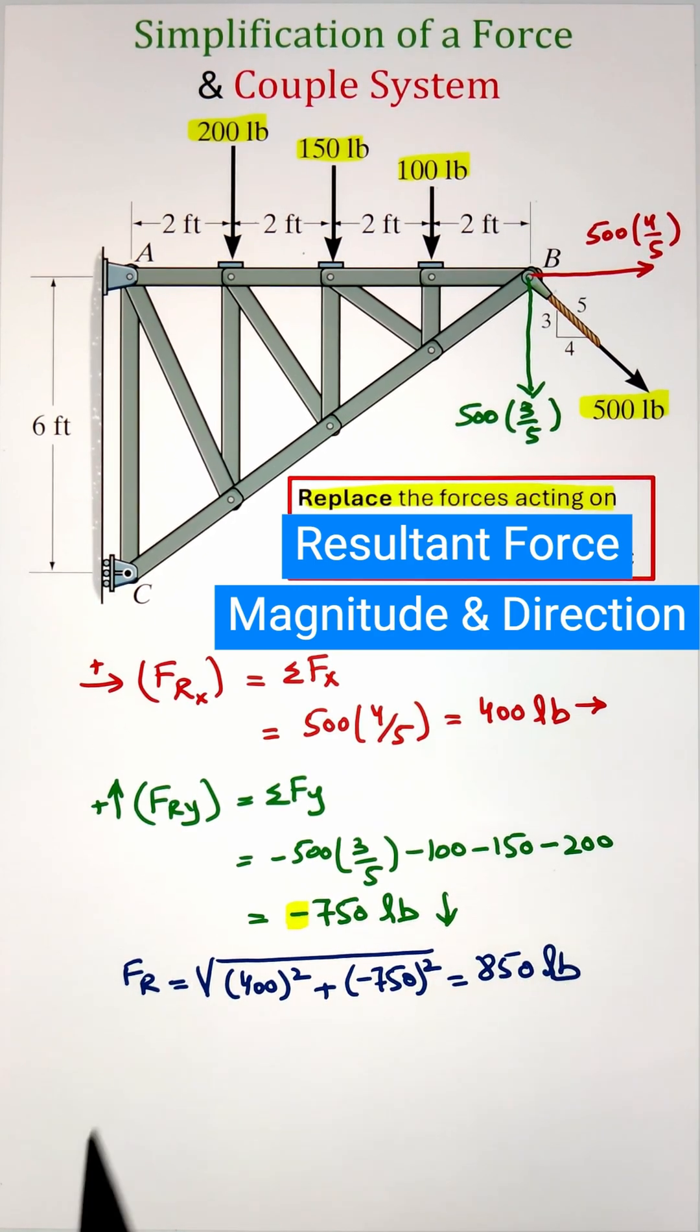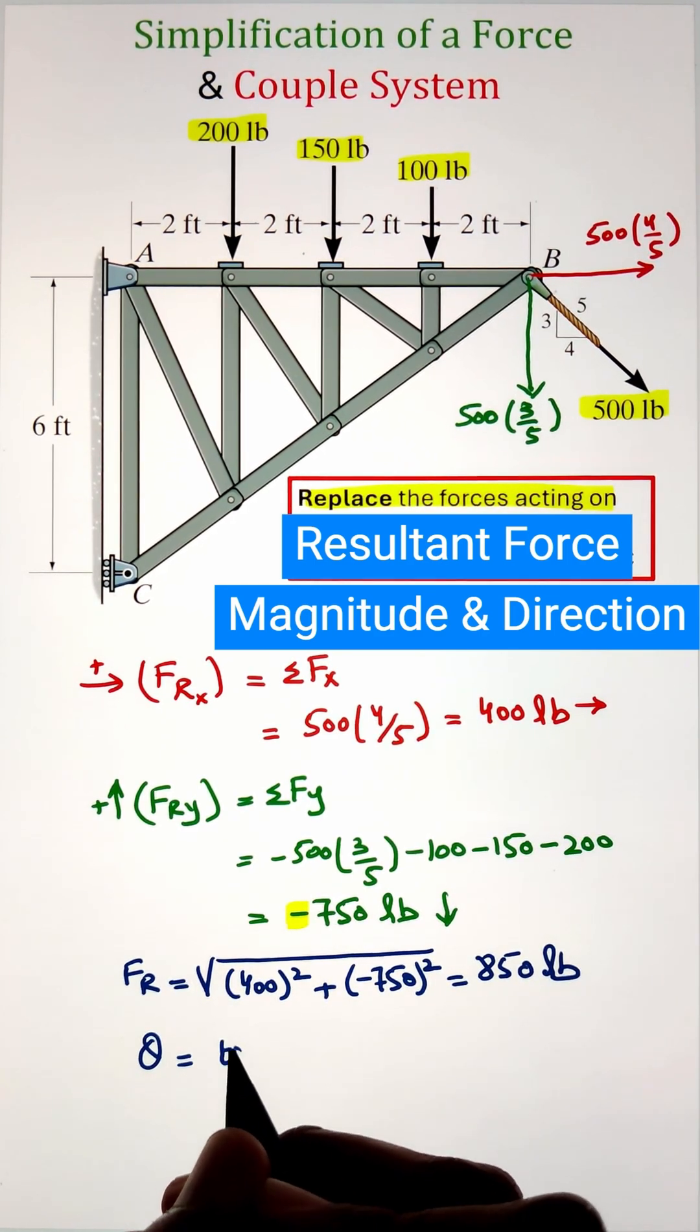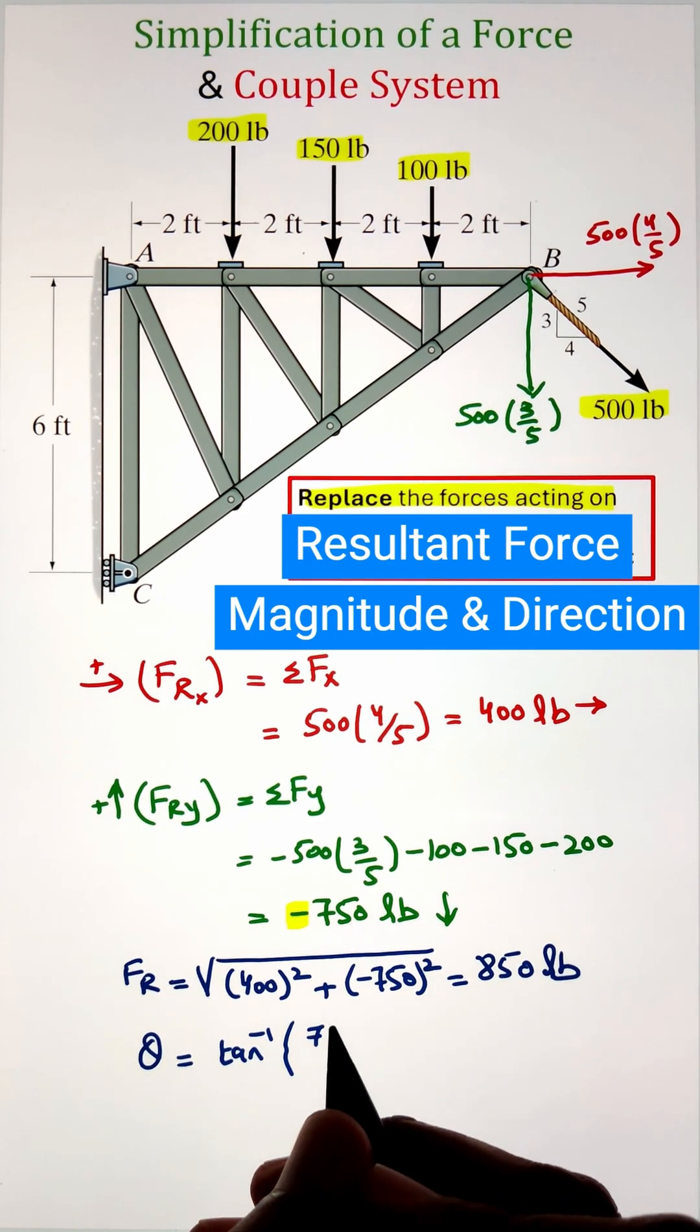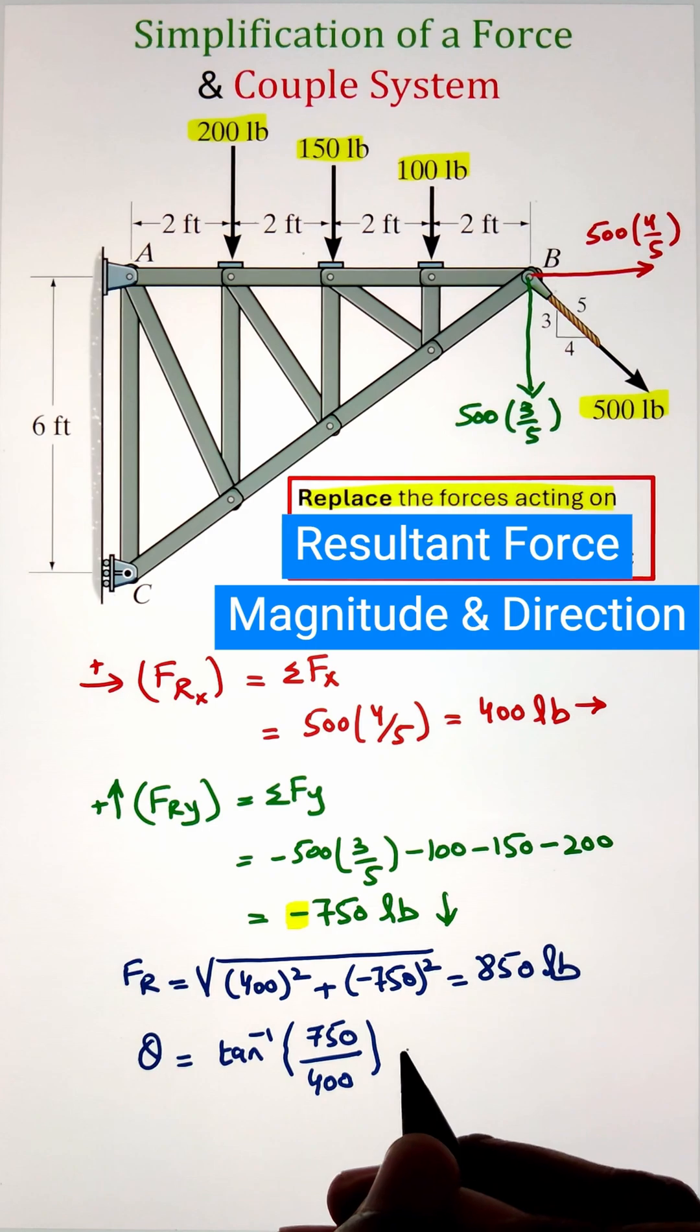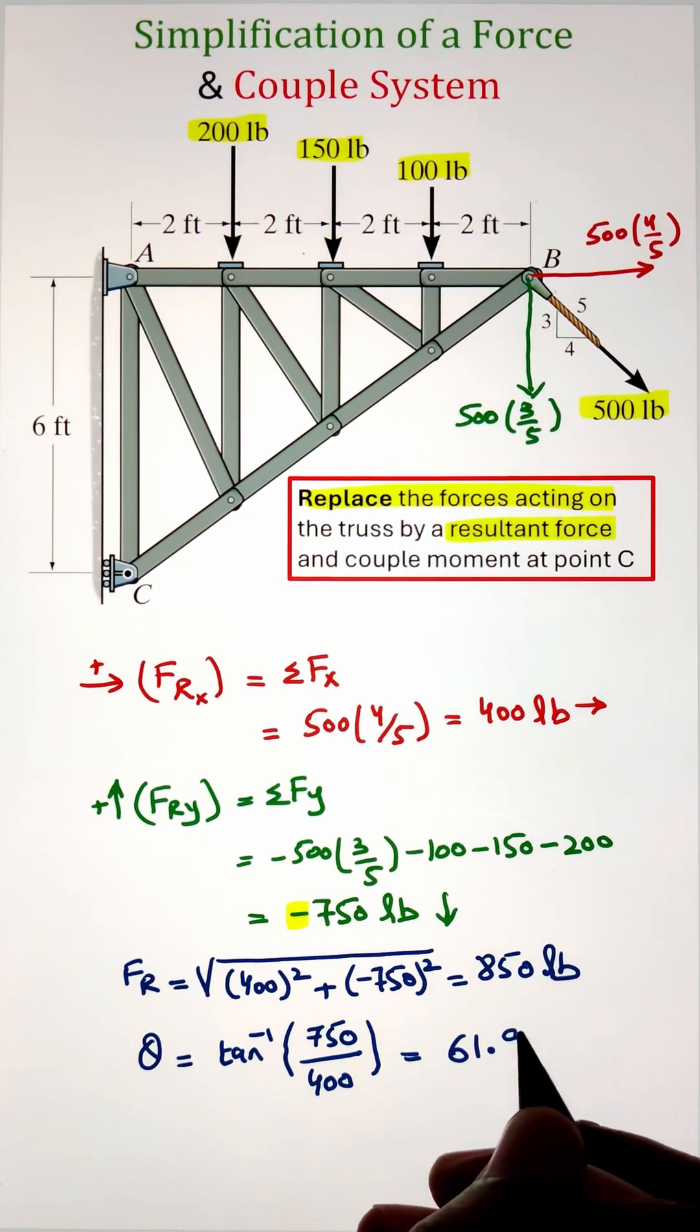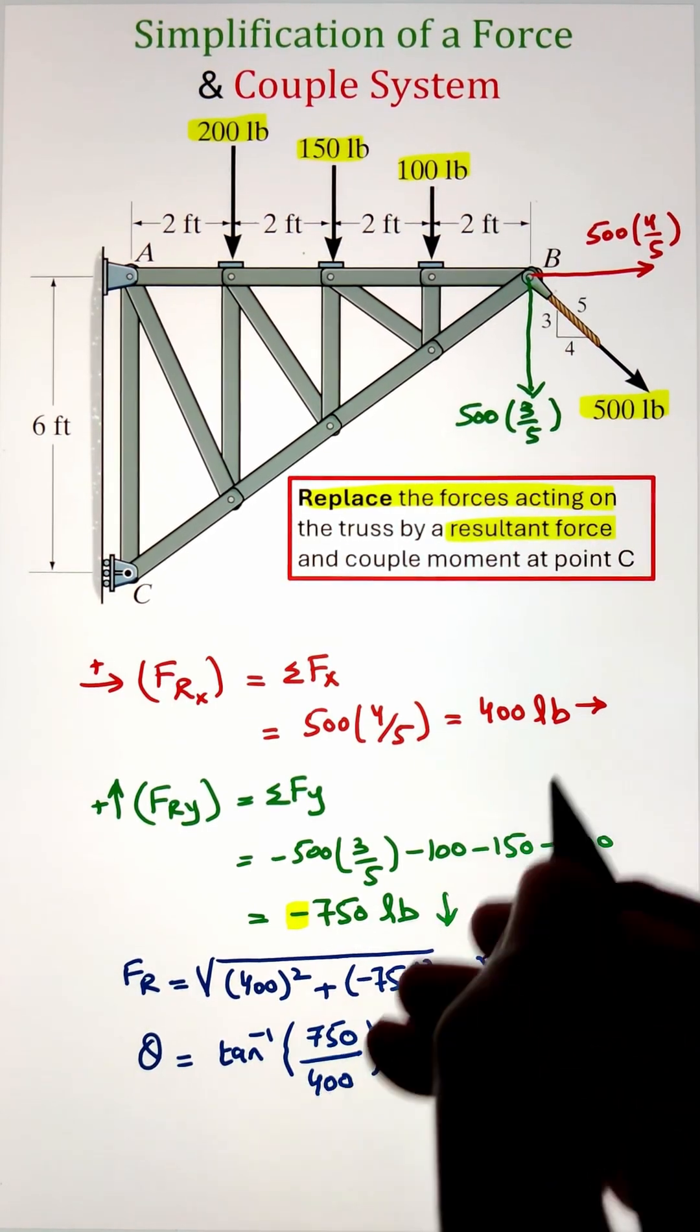In order to identify the direction of the resultant force we can use the tan inverse formula, that is taking a tangent inverse of the y component's magnitude divided by the x component magnitude, which gives us an angle of 61.9 degrees.